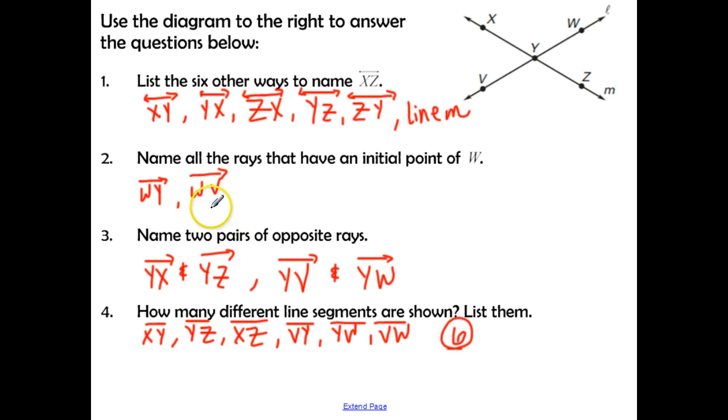For number two, we have ray WY and WV. Now make sure that your arrow for your symbol is pointing in the correct direction, because we need to have an initial point of W. For number three, two pairs. We can have ray YX and YZ, and the other pair is YV and YW. And again, make sure your symbols are pointing in the correct direction to signify the correct ray.